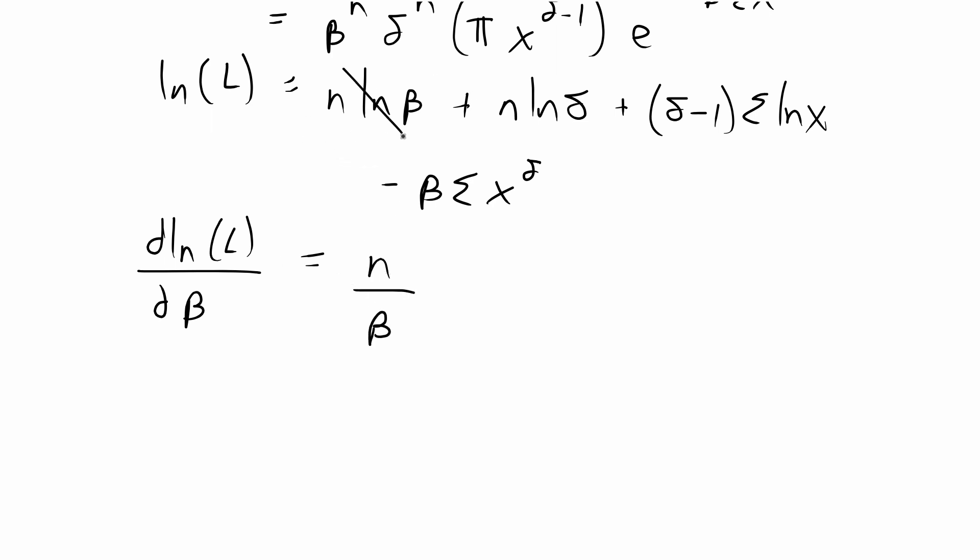So for this part of the problem, this is going to be n over beta when we take the partial derivative. This does not have a beta term in it so the derivative is going to be zero. This also does not have beta in it so this cancels out to zero. And this has a beta, so the partial derivative of that is negative the sum of x to the delta, and we set the partial derivative equal to zero. And now we're just going to solve for beta.